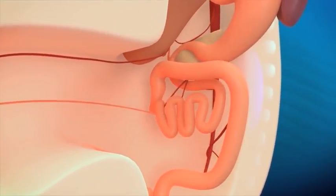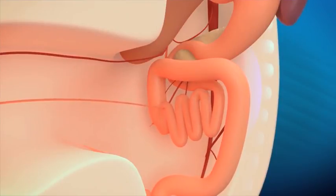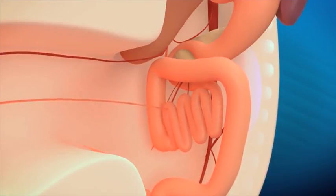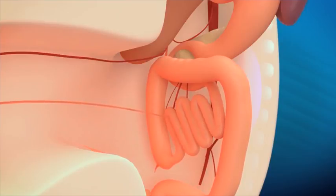Subsequently, the midgut rotates 270 degrees in a clockwise fashion along the axis of its supplying blood vessel, the superior mesenteric artery.